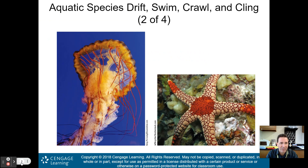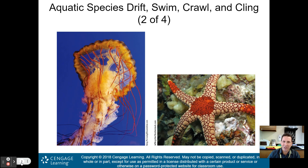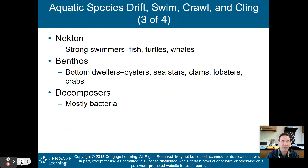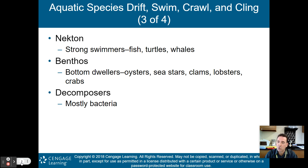Jellyfish are considered zooplankton. You'll notice a jellyfish on the left — the man-of-war — and on the right, a starfish or sea star, because it is definitely not a fish. These are examples of zooplankton. We then have nekton, which are organisms that are strong swimmers — fish, turtles, whales — grouped into the nekton category.